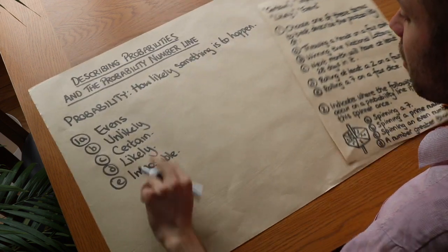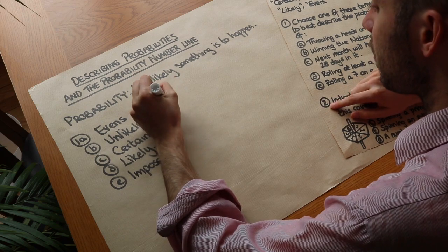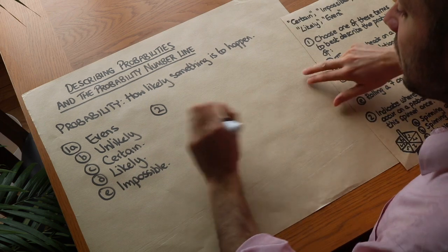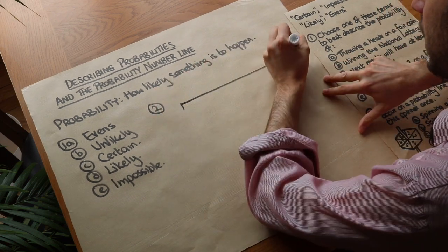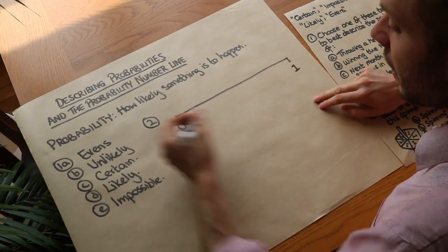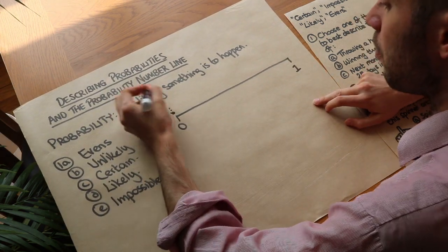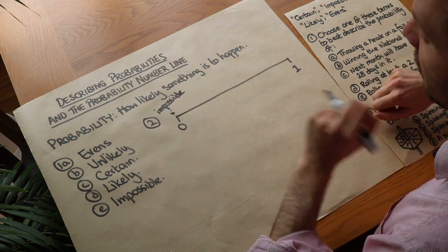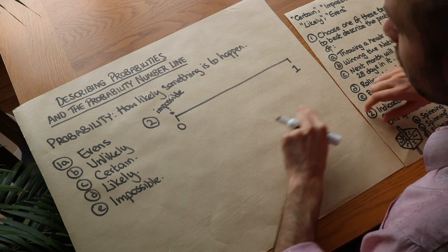Now, for this second question, we're going to use a number to represent the probability. Now probabilities always go between 0 and 1. Now 0 means that it's impossible, that it's absolutely not going to happen. So if something has a probability of 0, it's not going to happen.